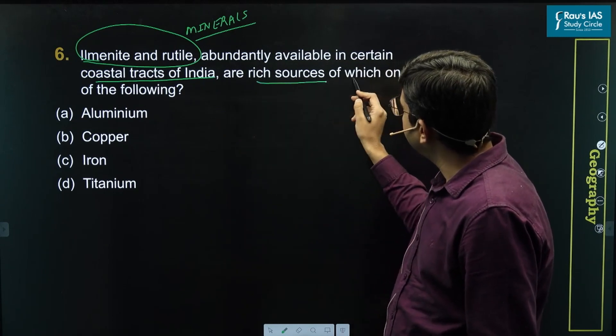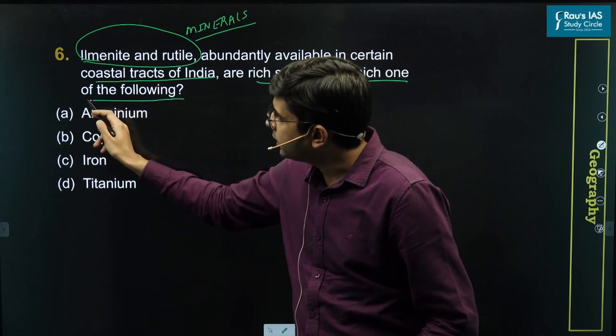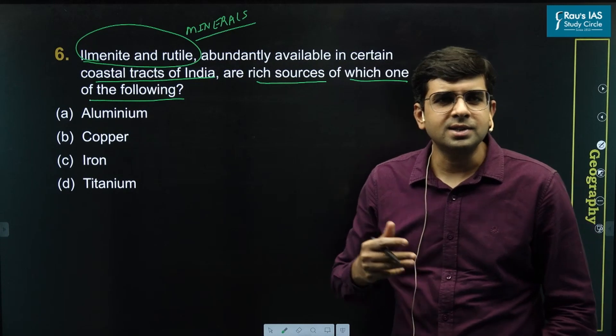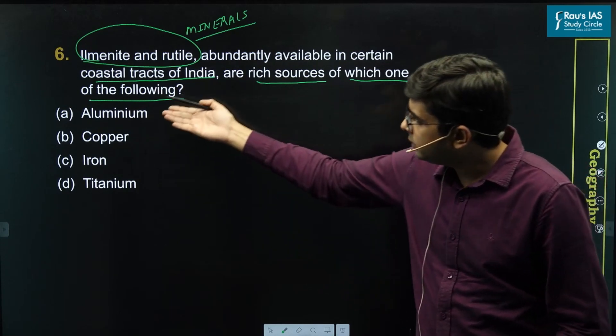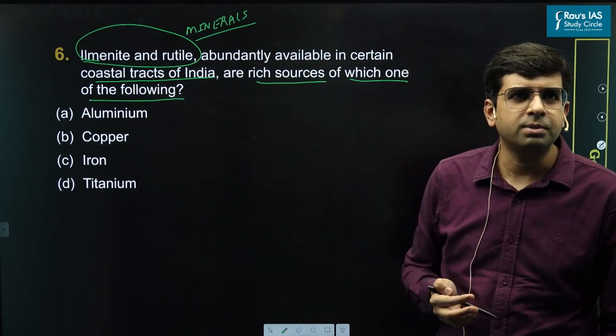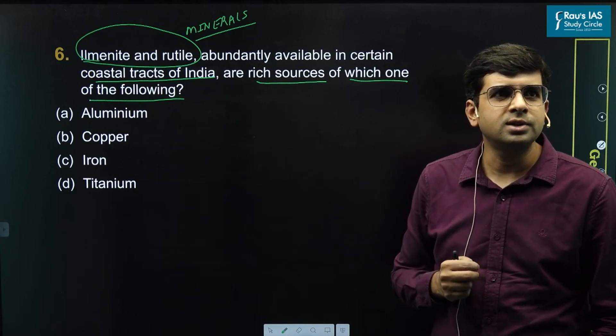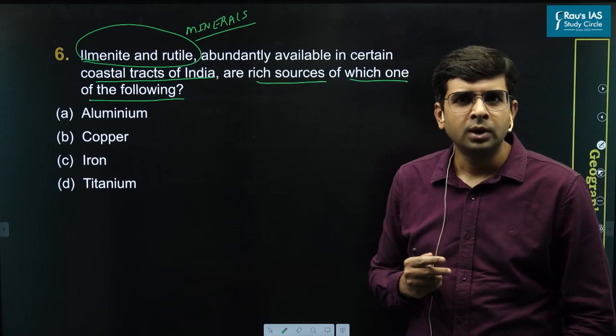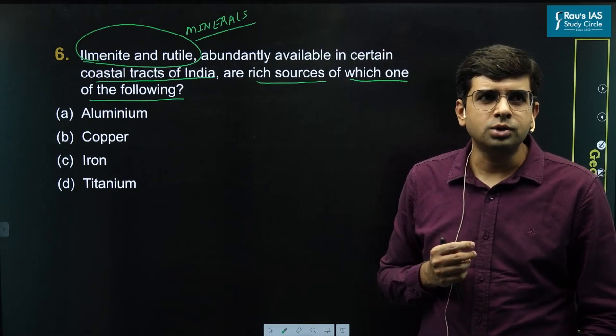are the rich sources of which one of the following? So the question is asking which of the following given options minerals are present in these ores, that is ilmenite and rutile. Let's look at how we can approach this question.